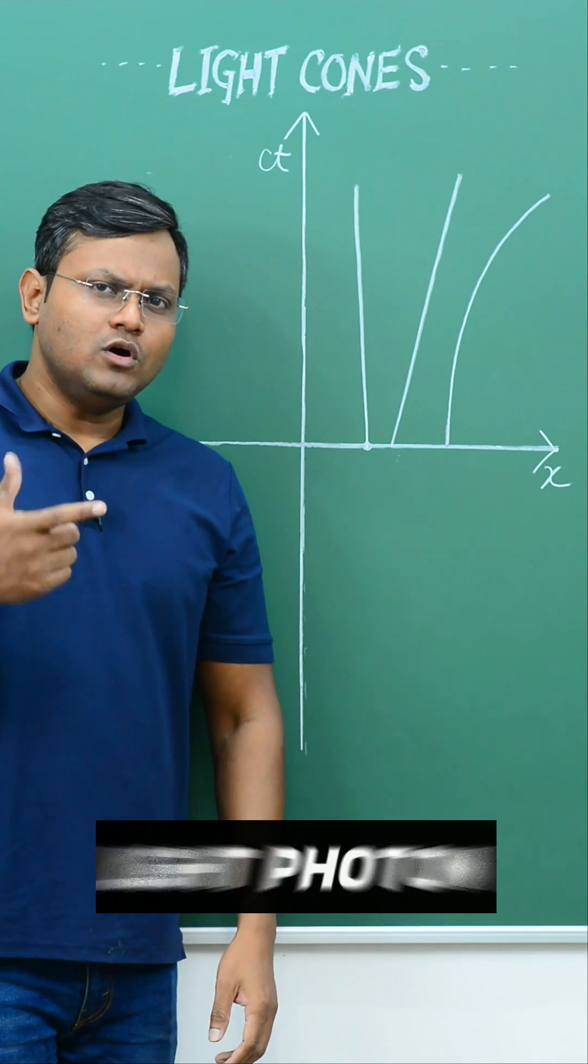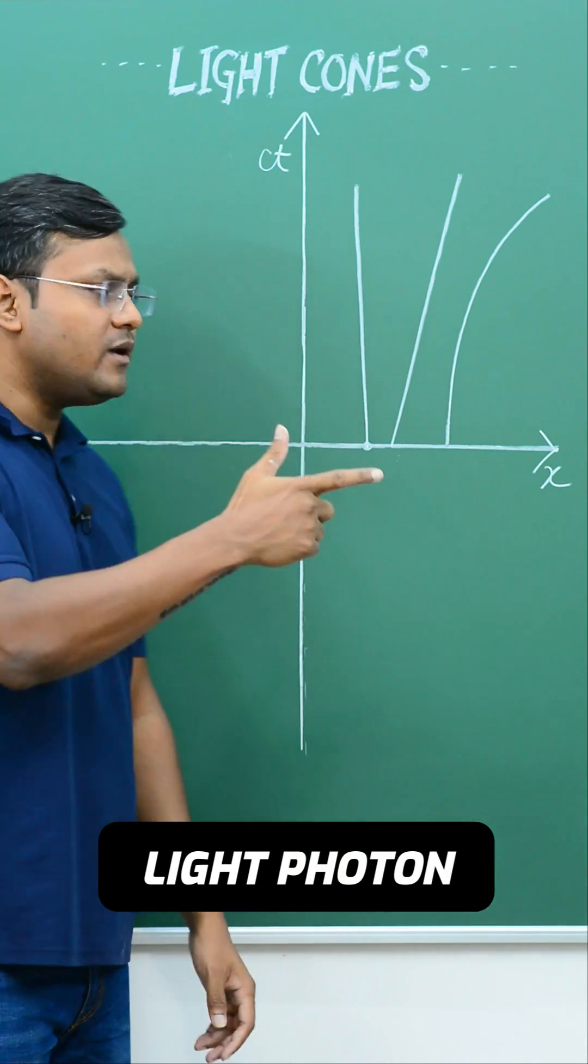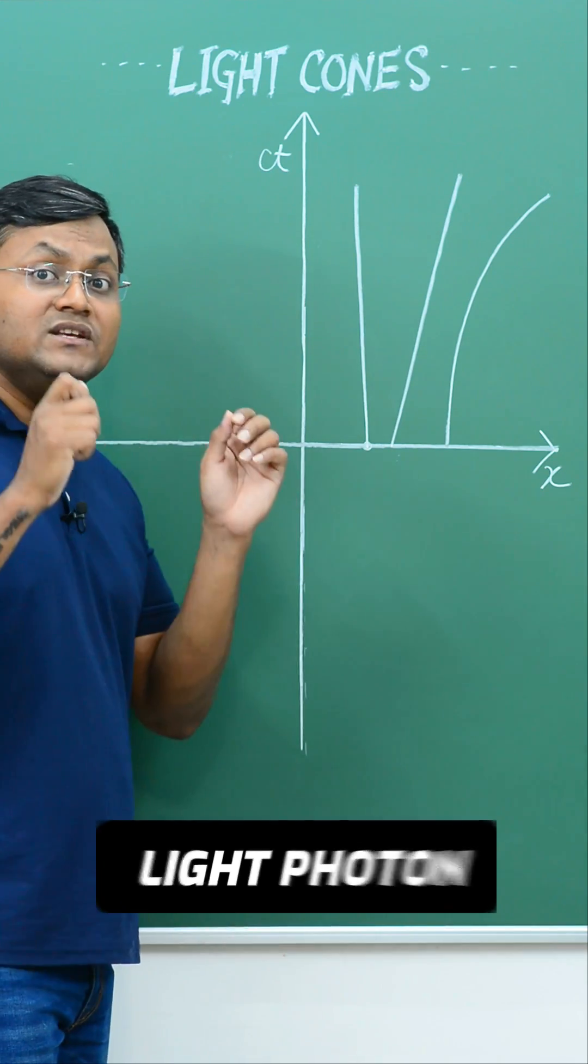Now if I observe a light photon going in one particular direction, that will also be represented by a straight line but with slope 1.